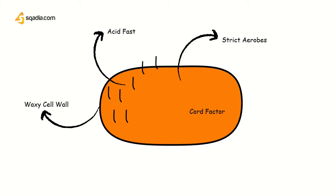This cord factor is responsible for the virulence of this bacteria. It prevents the attachment of the phagosome to the lysosome, helping the bacteria affect the organism. The proteins in the cell wall of this bacteria are also responsible for giving the results of the PPD, i.e., protein purified derivative test.